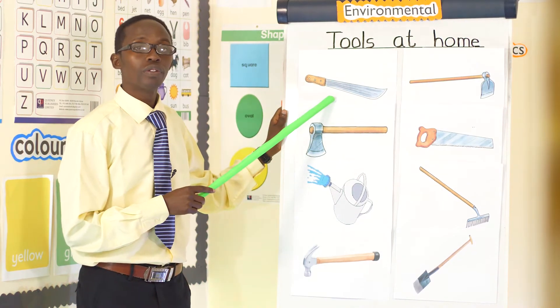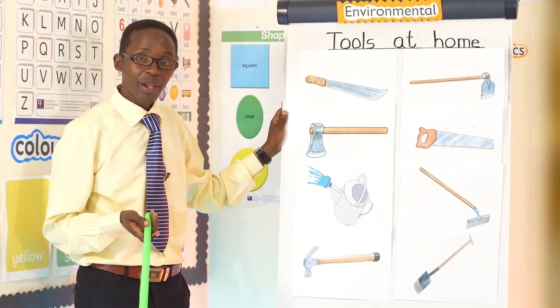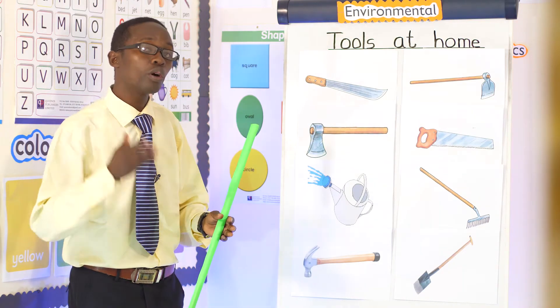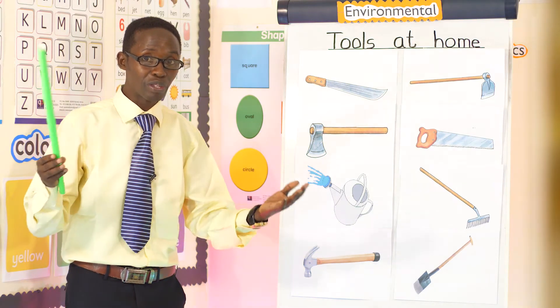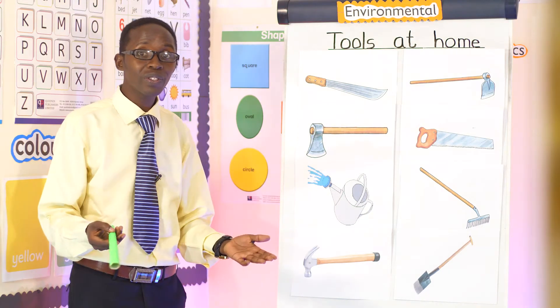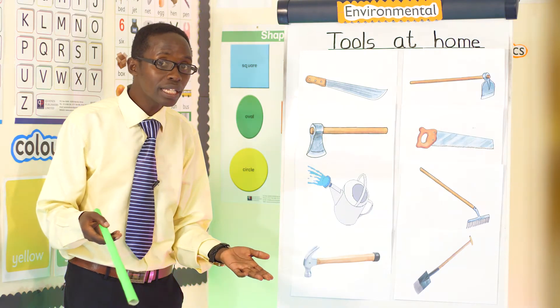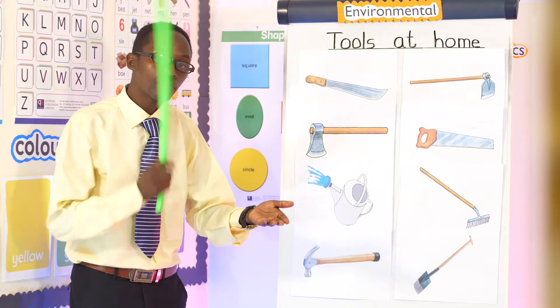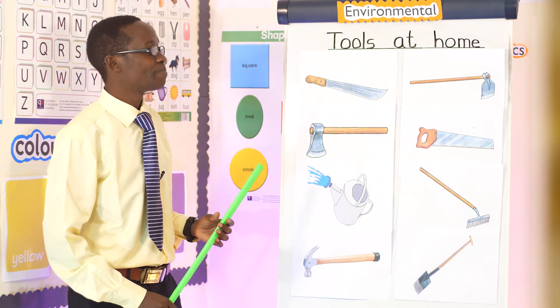What do we use this panga to do? Good. We usually use a panga to cut small sticks when you are building. You want sticks to build something like a toy or a small house or other activities. We usually use it with small sticks, so the work of a panga is cutting small sticks.